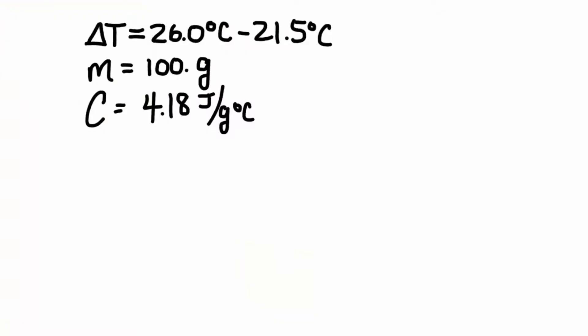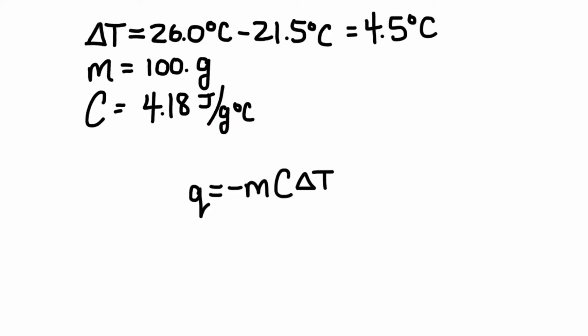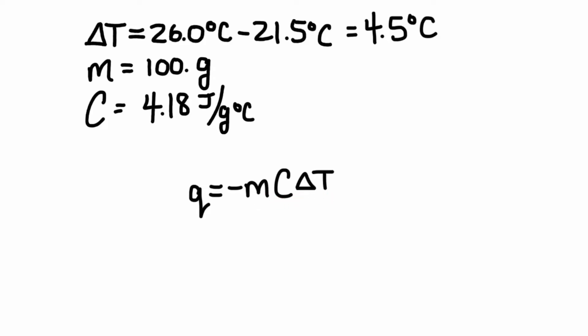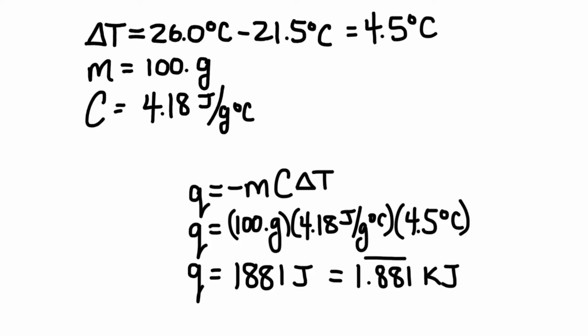Here's all the data from the experiment. The temperature increased from 21.5°C to 26°C, giving a change in temperature of 4.5 degrees Celsius. We started with 100 grams of water, and we use the specific heat of water as our constant. Plugging into the equation — mass × specific heat × ΔT — gives us 1,881 joules of heat released during the chemical reaction. Converting to kilojoules by dividing by 1,000 gives us 1.881 kilojoules.